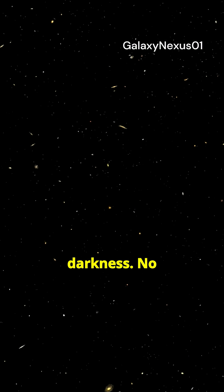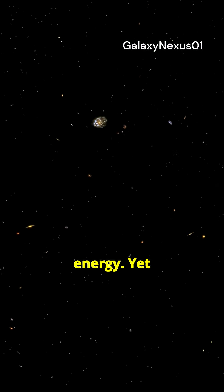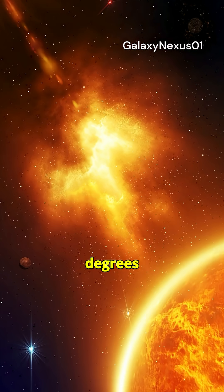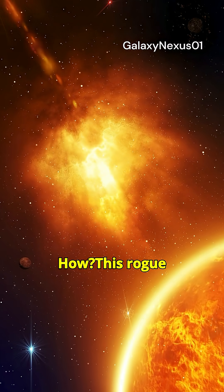There's a planet floating in total darkness, no star, no solar energy, yet it's over 1000 degrees Celsius hot. How?